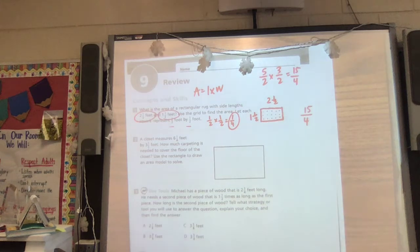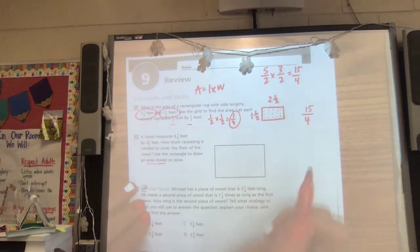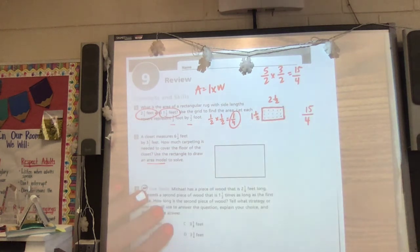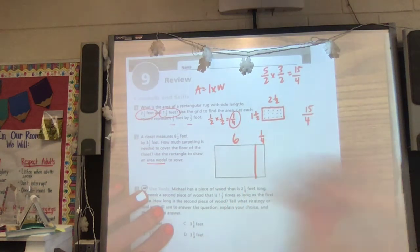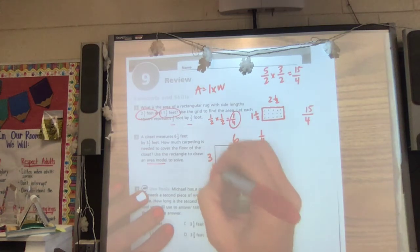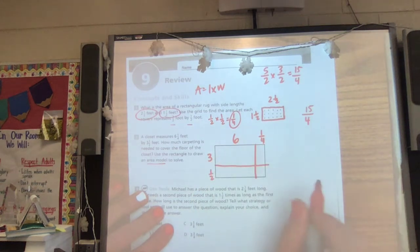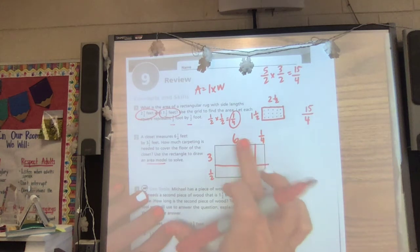Number two, a closet measures six and one fourth feet by three and a half. How much carpeting is needed to cover the floor? Use the rectangle to draw an area model. Remember the area model looks kind of like the box method when you multiply. And remember, it really doesn't matter how your picture looks. We've got six and a fourth. We'll just chop it right there. And our other one was three and a half. Again, you just kind of draw it how you want to. And then we're going to multiply these.